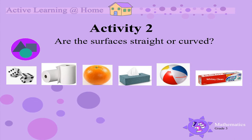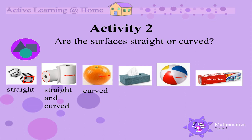Dice have a straight surface. Toilet rolls have straight and curved surfaces. An orange has a curved surface. A tissue box has a straight surface. A ball has a curved surface. And a toothpaste box has straight surfaces.